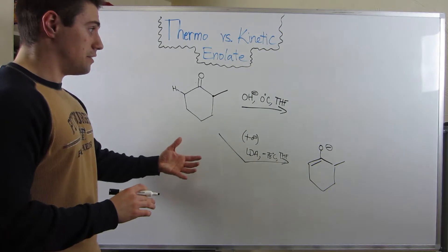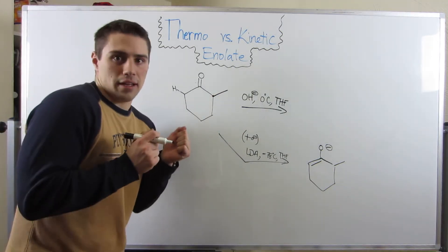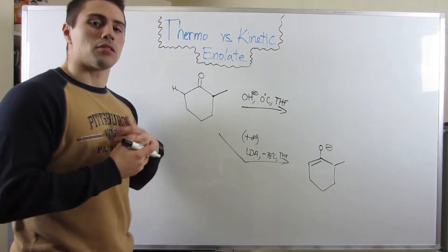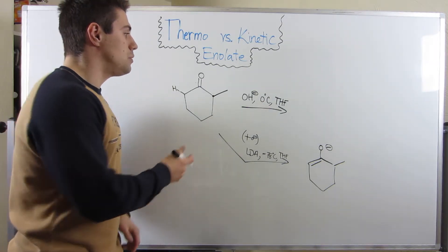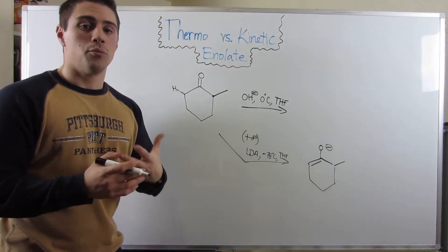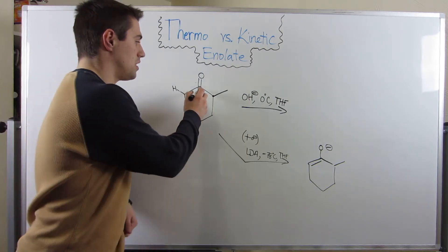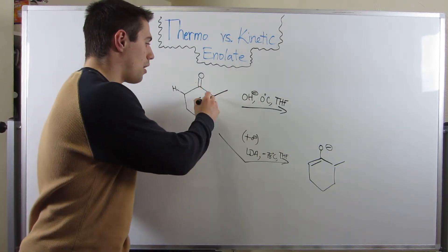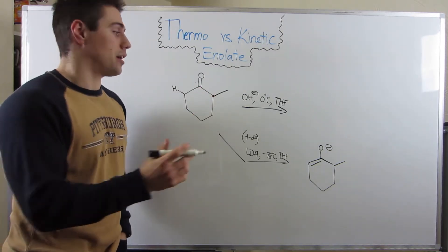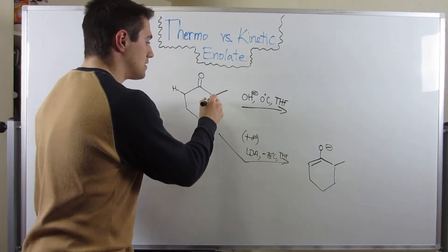On the other hand, if we have a smaller base that can wiggle in there, and zero degrees C, it's a little warmer, we will actually form the more substituted double bond, the more thermodynamically stable double bond. You have to look to see where can I make the double bond with the carbons with the highest degree, because he's tertiary versus this carbon being secondary.